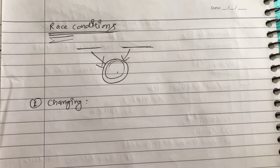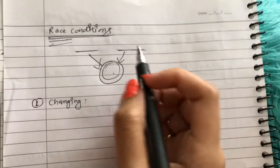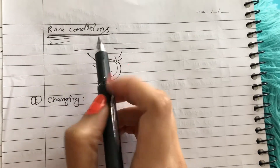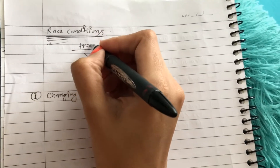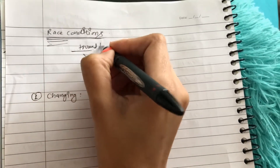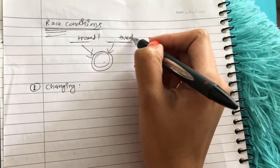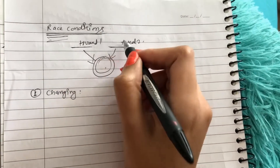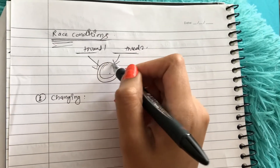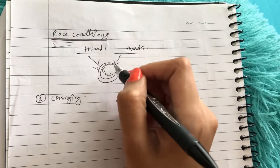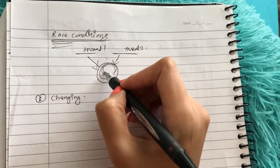Today we're talking about race conditions. What race conditions basically do is when two concurrent threads — thread one and thread two — working simultaneously try to access the same resource.